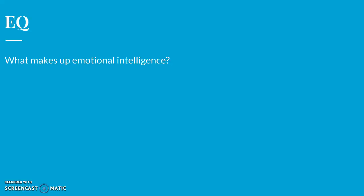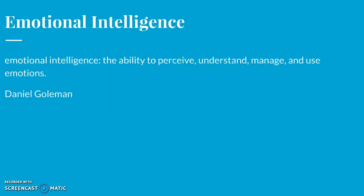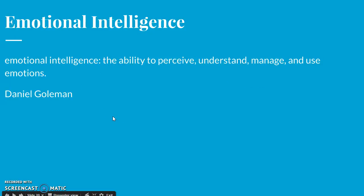The last essential question for today: what makes up emotional intelligence? Emotional intelligence was first conceived by Daniel Goleman as the ability to perceive, understand, manage, and use emotions. It includes perceiving emotions — recognizing them in faces, music, and stories — understanding emotions and how they change and blend, managing how to express them in varied situations, and using emotions to enable adaptive or creative thinking.